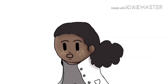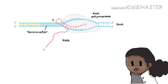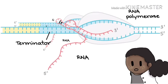Last is transcription termination. RNA polymerase will keep transcribing until it gets a signal to stop. The process of ending transcription is called termination, and it happens once the polymerase transcribes a sequence of DNA known as a terminator.